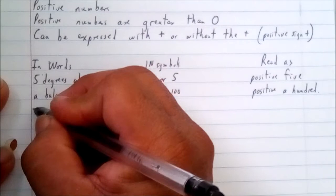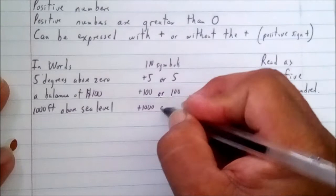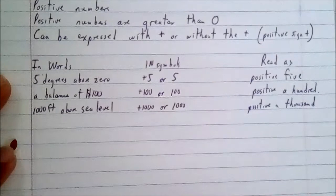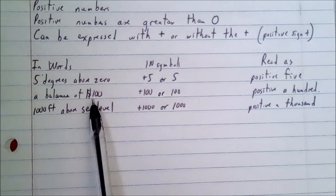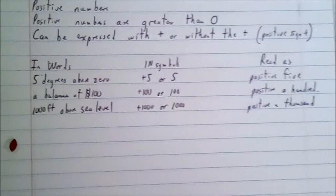One thousand feet above sea level can be stated as plus one thousand or simply one thousand, read as positive a thousand. So in words you can say five degrees above zero — it is plus five or simply five, positive five. A balance of a hundred dollars is plus a hundred or simply a hundred, and it is read as positive a hundred.